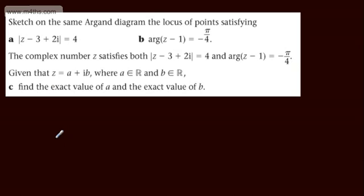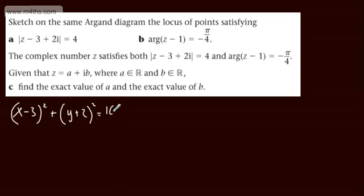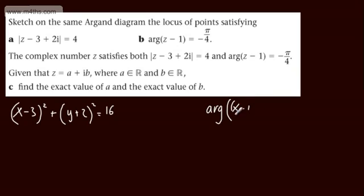Writing the circle in Cartesian form: (x − 3)² + (y + 2)² = 16. Note that the radius squared is 16, not 4 — a common error is to leave it as 4. For the half-line, rewriting z as x + iy, we have arg(x − 1 + iy) = −π/4. Removing the argument gives y/(x − 1) = tan(−π/4).